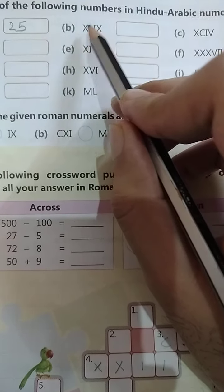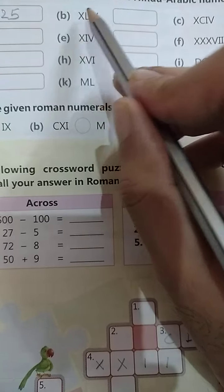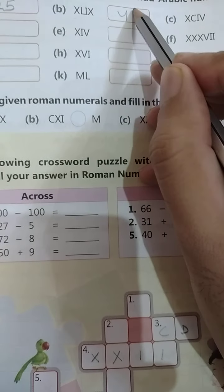Next, see. This is big, so first it is minus. The biggest one is L, so 50 minus 10 is 40, and this is 9, so this is 49.